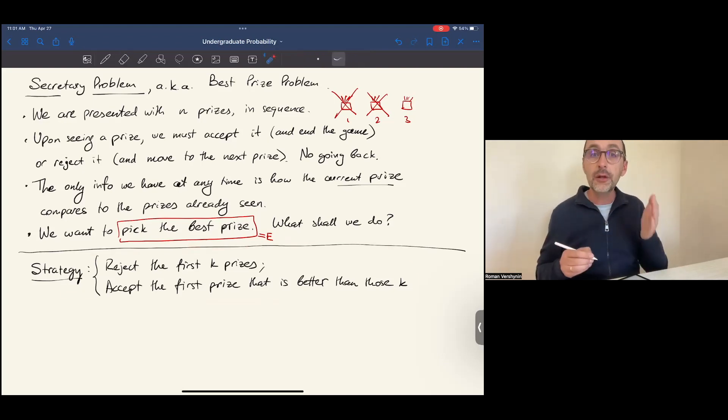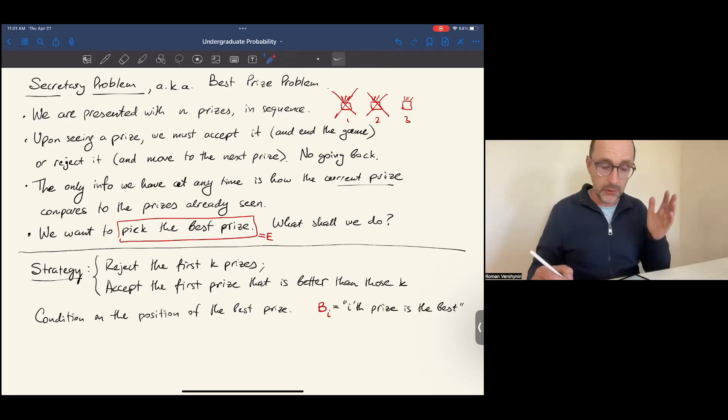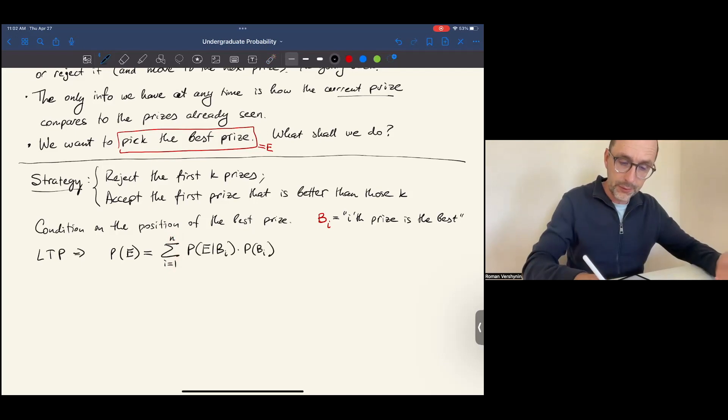We would love to know which prize is the best. So let's condition on the position of the best prize. Let bi denote the event that the i-th prize is the best, where i can be a number between 1 and n, the total number of prizes. The law of total probability allows us to compute the probability of E by summing the conditional probabilities times the probability of bi over all possible values of i.